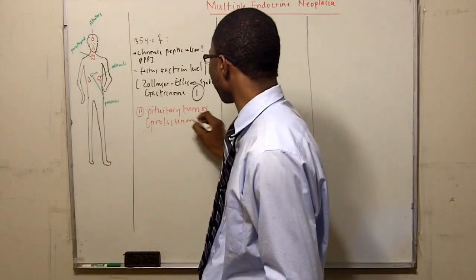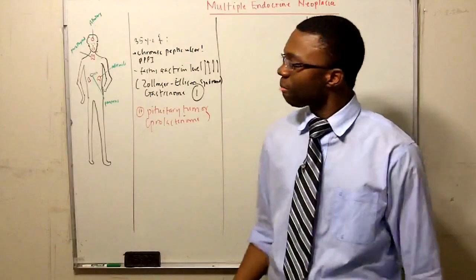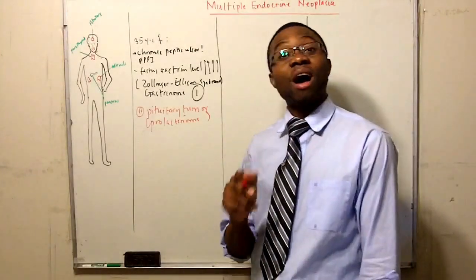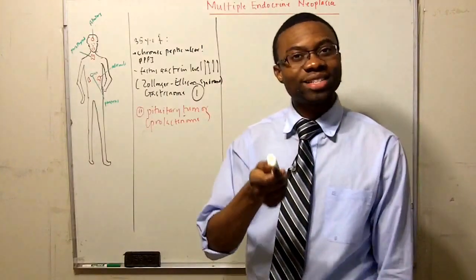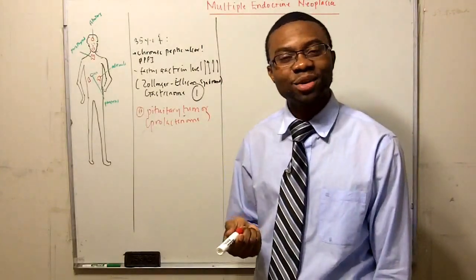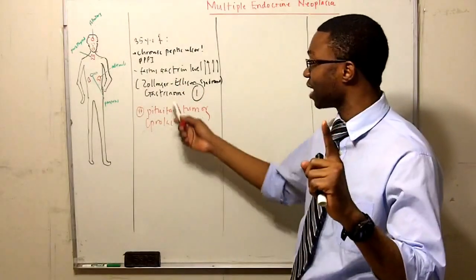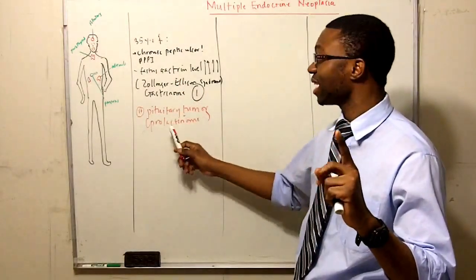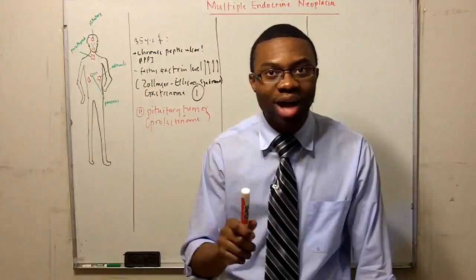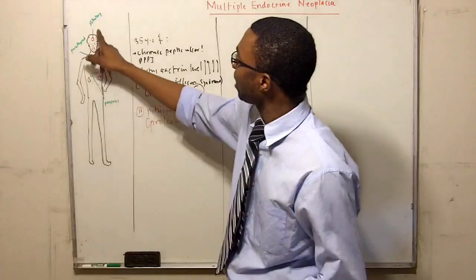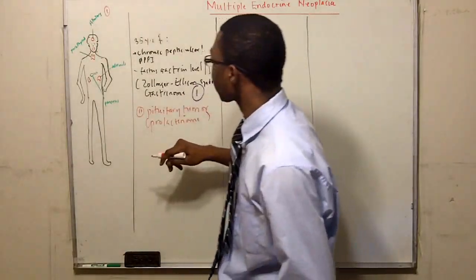So before she walks out of the office, I'm thinking in my head, on the board exam this is how they are going to ask you. She has Zollinger-Ellison syndrome. That's one thing we just diagnosed. She has a pituitary tumor. What other tumor can she possibly have?